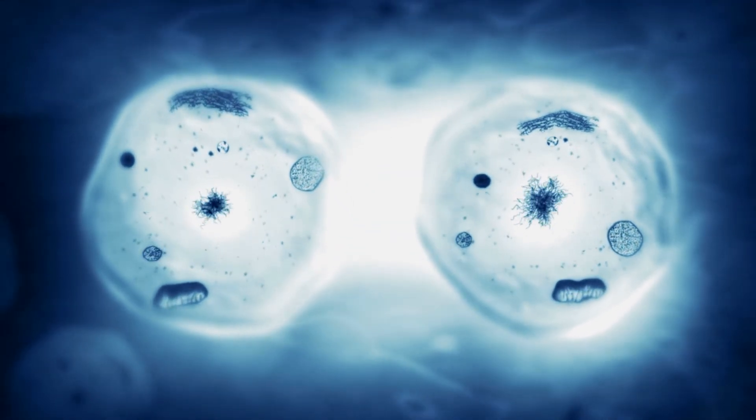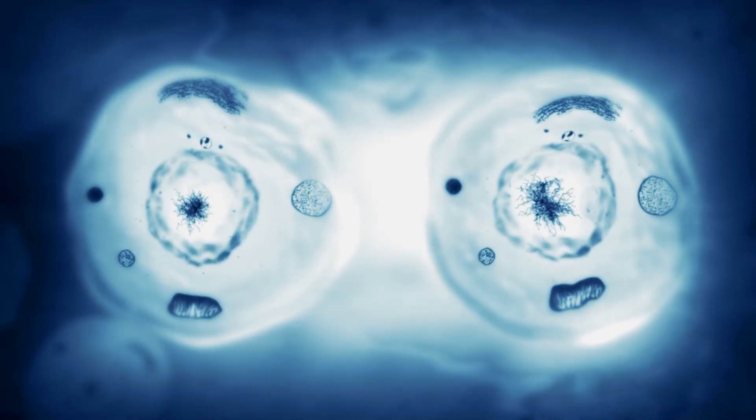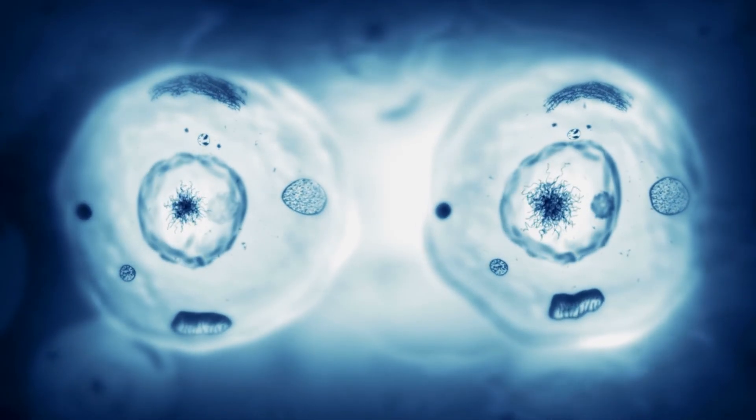After the two daughter cells have been formed, each cell enters interphase and prepares to continue the process of mitosis. Through the process of mitosis, an onion is able to grow and develop into a mature plant. The same process of mitosis enables our bodies to grow and develop into mature adults.